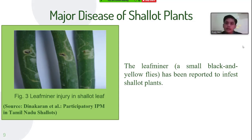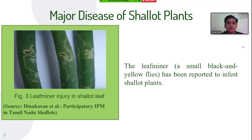The leaf miner injury in shallot leaves — the leaf miner, a small black and yellow fly, has been reported to infest shallot plants. The identification process shows that the leaves become distorted and do not grow in the usual straight and upward manner. Some leaves will lie on the ground, and small green or grey marks in rows down the foliage indicate the points at which the pest fed.